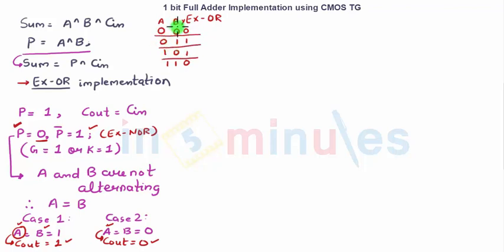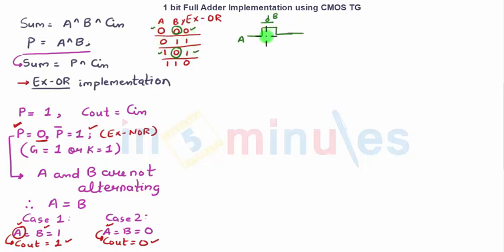We have already done this. If we make B the select line, it says that if B is 0, then for a PMOS, the output is equal to A, because we are using a transmission gate. So I am going to connect an NMOS in parallel — this will have B_bar, the opposite polarity. The other case is when B is equal to 1, the output is equal to A_bar.